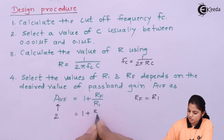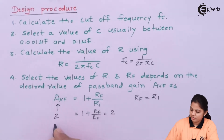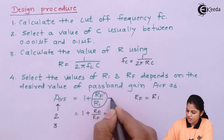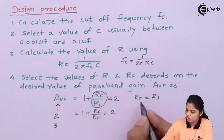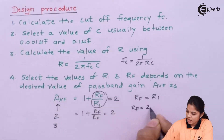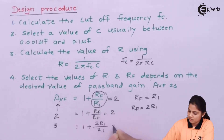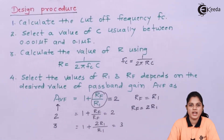For example, if the gain AVF is given as 2, then RF must equal R1 to get 1 + RF/R1 = 2. If AVF is given as 3, then RF should be equal to twice R1, because substituting gives 1 + 2R1/R1 = 3. That is how you decide the values of R1 and RF to achieve a particular gain.